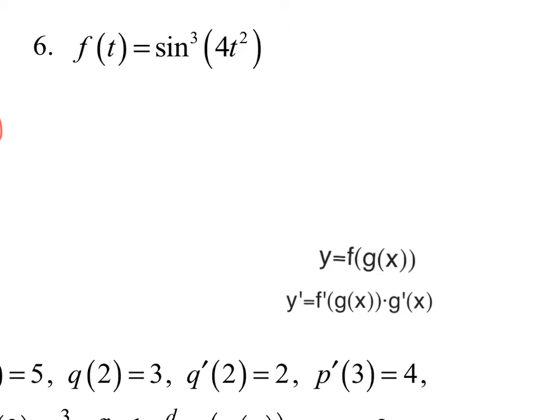Number six — I see three functions: the cube as the outside function, sine of 4t squared as the inside function, and 4t squared as another inside function. So we have a composition involving three functions. Three functions means I'm going to get two chains. There is a rule for a composition involving three functions, but you shouldn't need to memorize it.